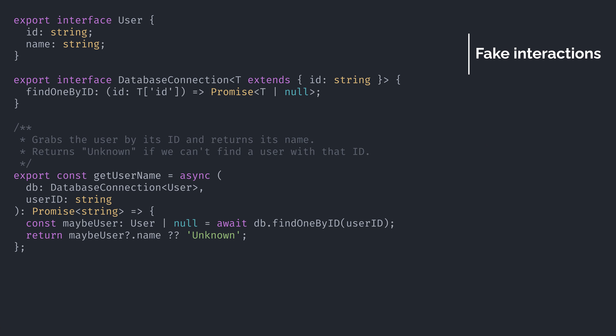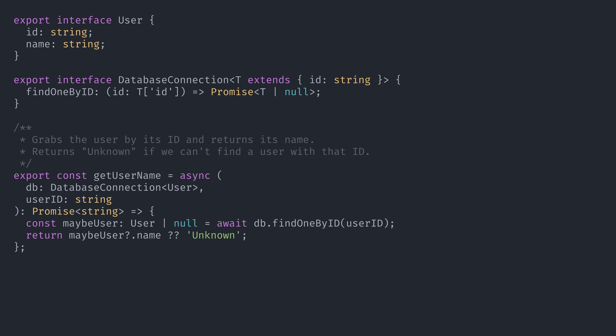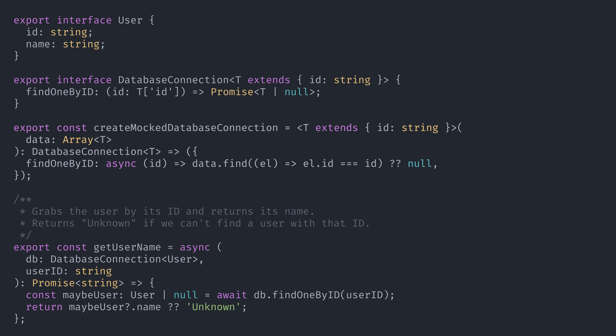For example, let's say you want to test a function that requires a connection to a database. The function may depend on a database, but the database is not the focus here. The focus is the function itself. We're not testing the database or the database connection — we're just testing a function that depends on those things. Sure, by providing an actual database connection, we ensure that our test is more real, but that comes at the expense of complexity and maintainability.